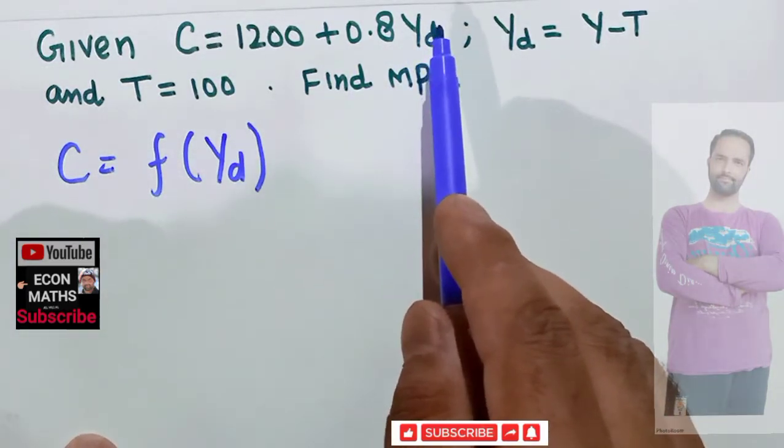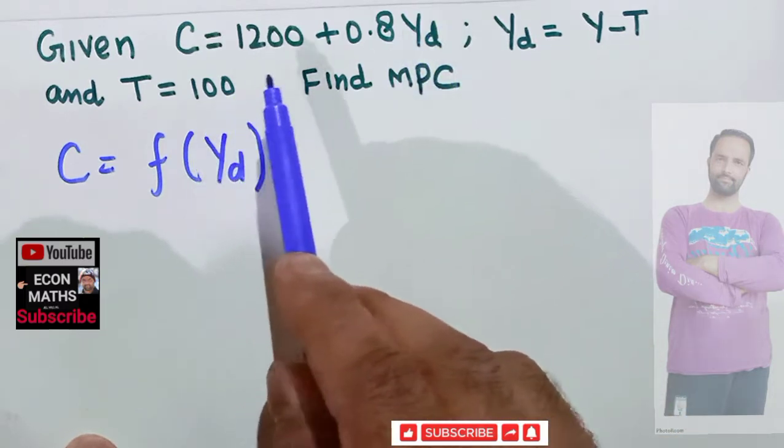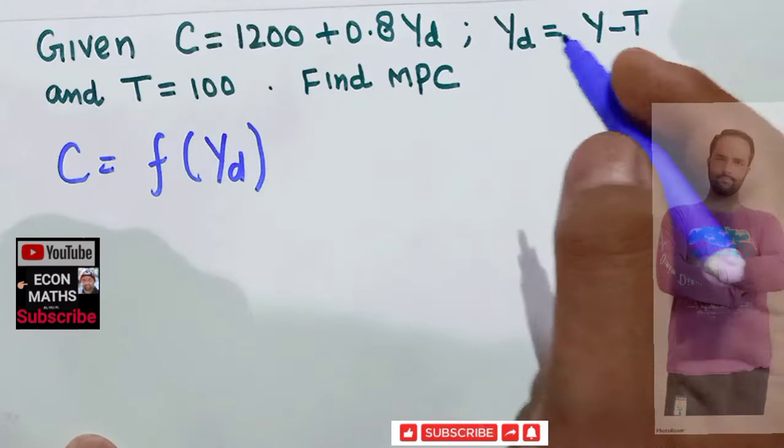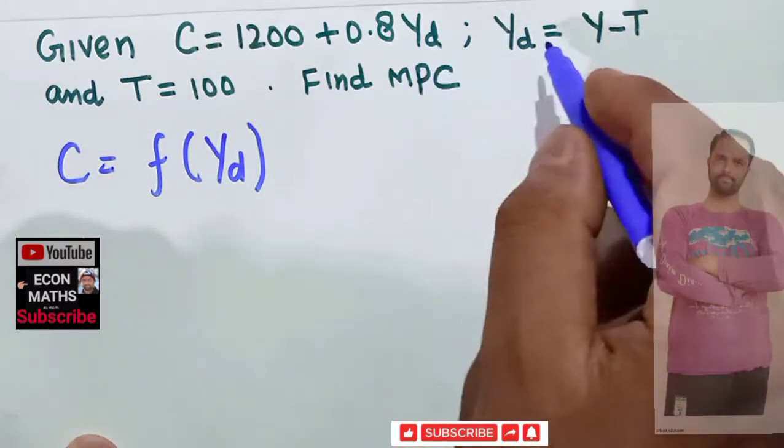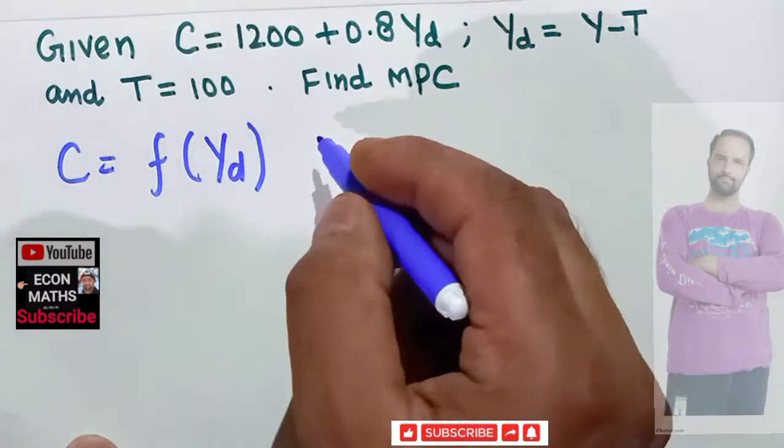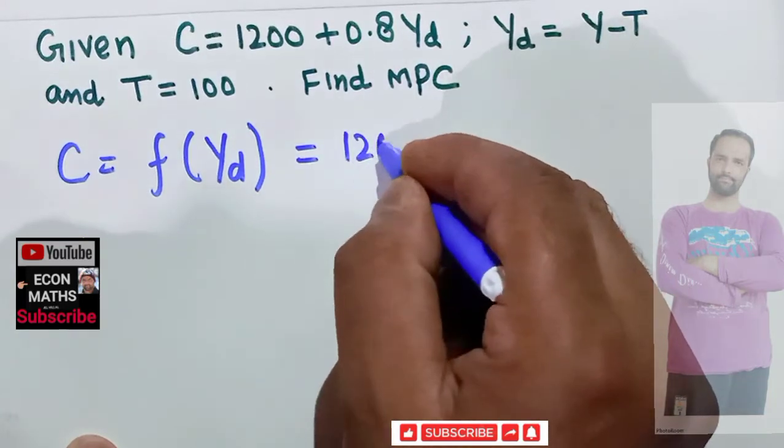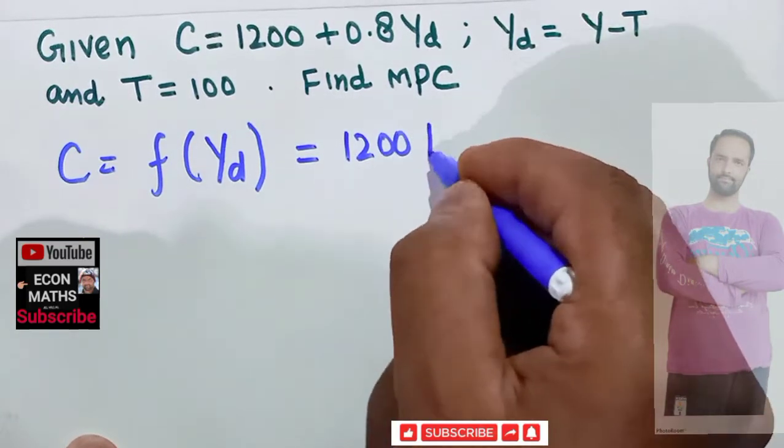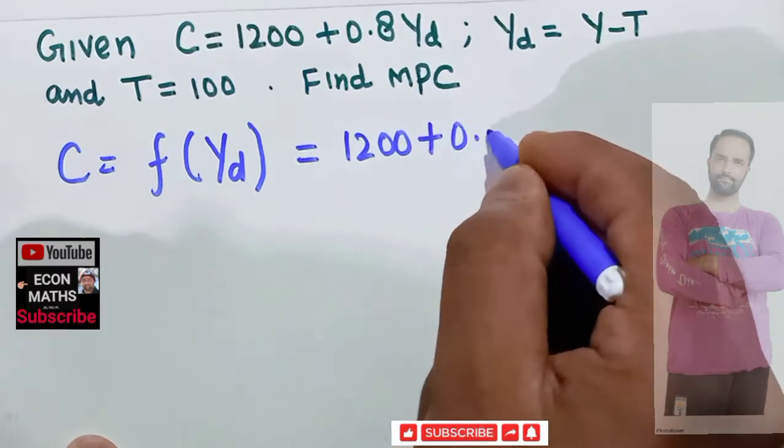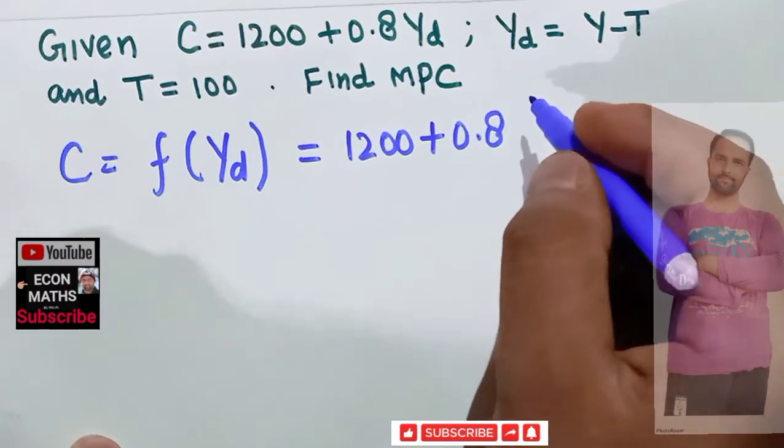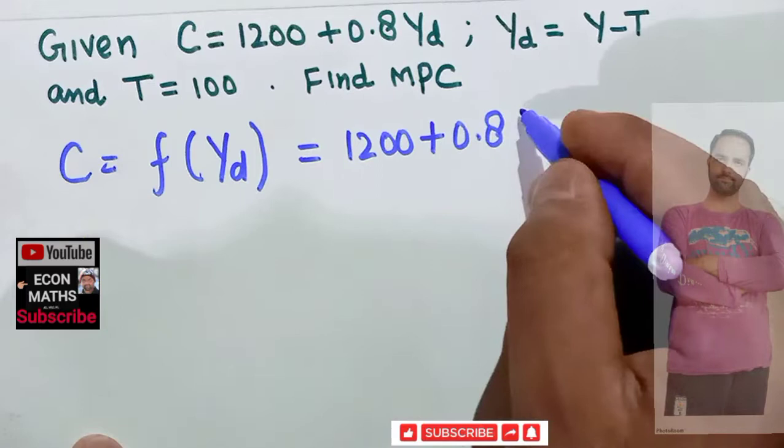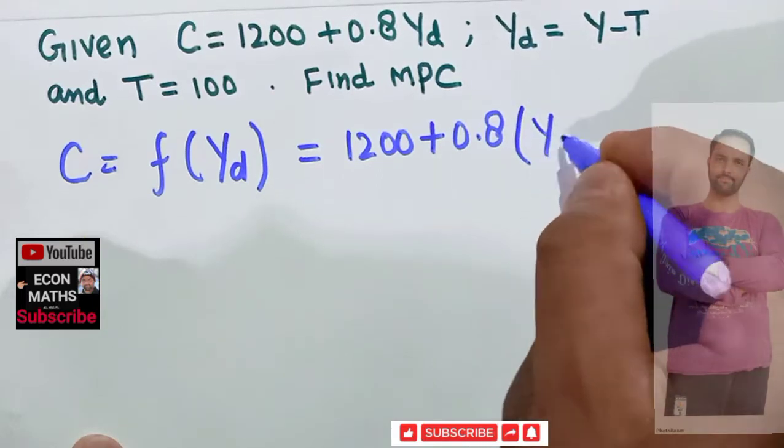Before we take the derivative of this, we need to add up this disposable income function. If our C equals 1200 plus 0.8, the value of disposable income is Y minus T, which again gives us 1200 plus 0.8 times Y minus T.